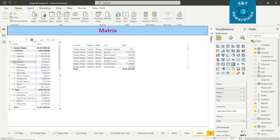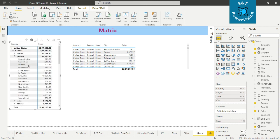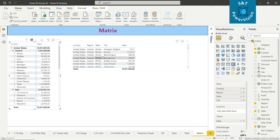But in table, we do not have this option. That is the major difference between table and matrix.